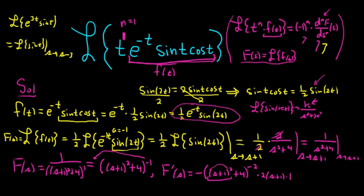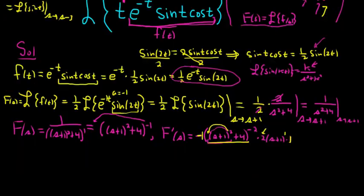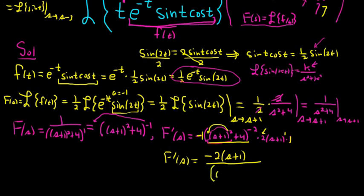Recap: take the negative 1 and put it in front — that's the negative 1 we see. Subtract 1 to get negative 2, leave the inside alone, then take the derivative of the inside putting the 2 in front, giving s plus 1 to the first power times 1 — that's the derivative of s plus 1. The derivative of 4 is 0, so we don't write it. So F prime of s equals negative 2 times s plus 1, all over s plus 1 squared plus 4, quantity squared.